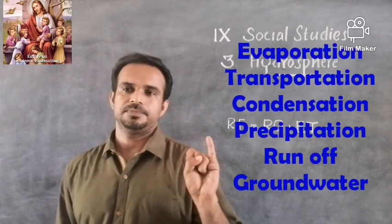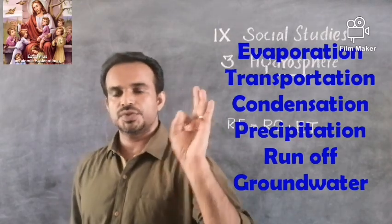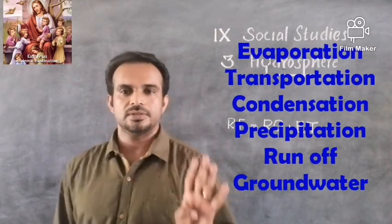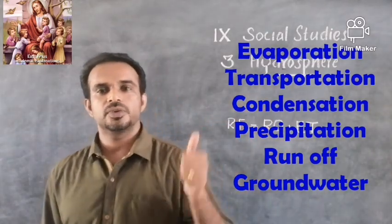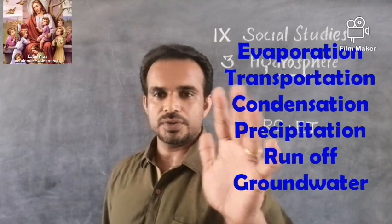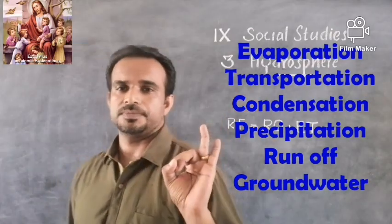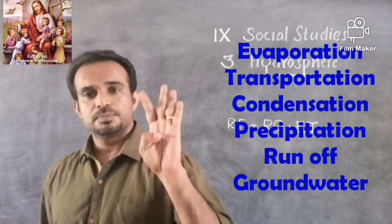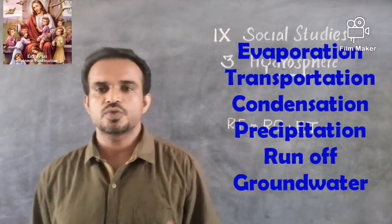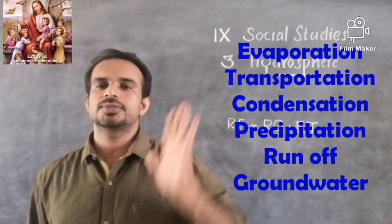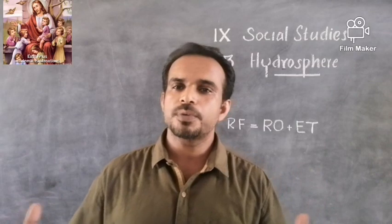The six stages of the hydrological cycle are: evaporation, transportation, condensation, precipitation, runoff, and groundwater. All six stages are present and each one is essential.